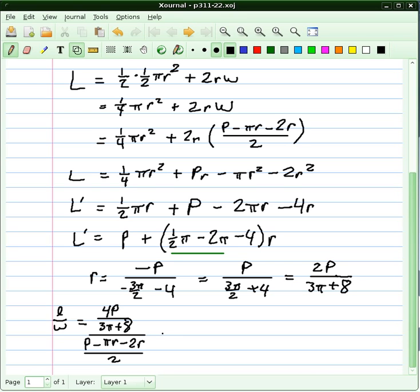After quite a bit of simplification, I can first get that 2 out of there on the bottom and make the numerator 8P over 3π plus 8, over P minus π times r—and remember we have r, r is 2P over 3π plus 8—minus 2r.